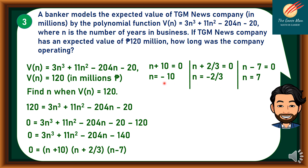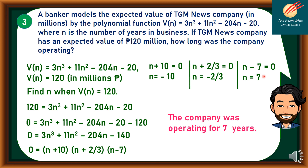Since we cannot use n = −10 or n = −2/3, because there is no such thing as a negative number of years, we can only use n = 7. Therefore, the company was operating for 7 years.